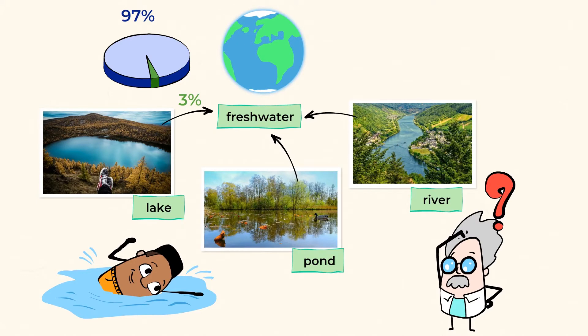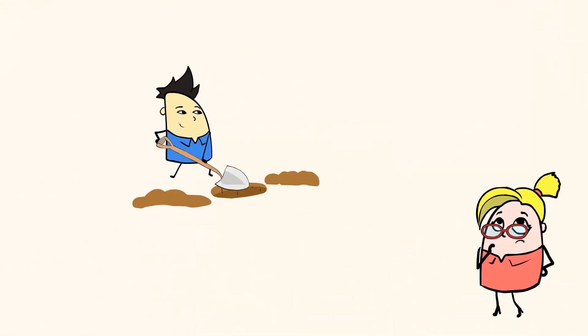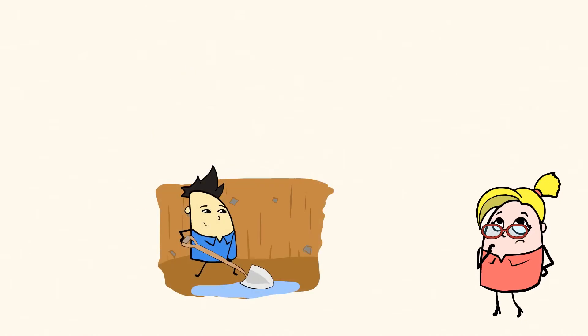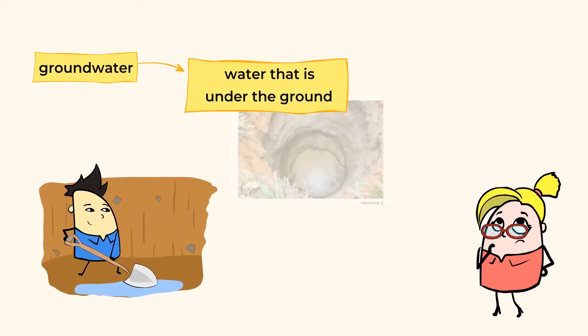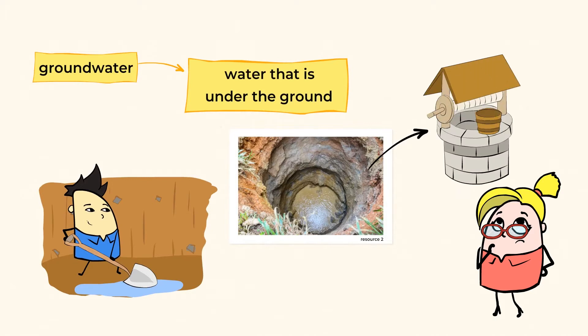Have you ever dug a really deep hole, and when you get down deep enough, the soil is wet? Well, if you have, you probably have found groundwater. Groundwater is water that is under the ground. Humans have learned to dig into the Earth in order to get water and to be able to use it in our homes. How mighty cool is that?